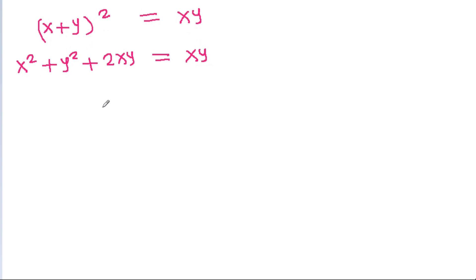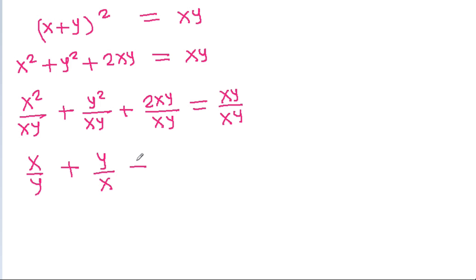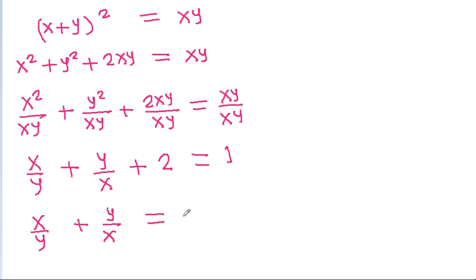If we divide both sides by xy, then we get x squared by xy plus y squared by xy plus 2xy by xy equal to xy by xy. This simplifies to x by y plus y by x plus 2 equals 1, so x by y plus y by x is equal to 1 minus 2, which is minus 1.